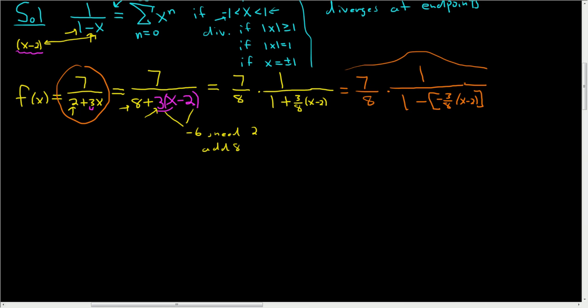Now this is going to be equal to 7 over 8, and all of this, we're just going to use the formula. So we're just going to replace this with this. That's going to be our x. So it's the sum as n runs from 0 to infinity. And this whole thing here is being raised to the nth power. So this is negative 3 eighths, x minus 2 to the nth power.